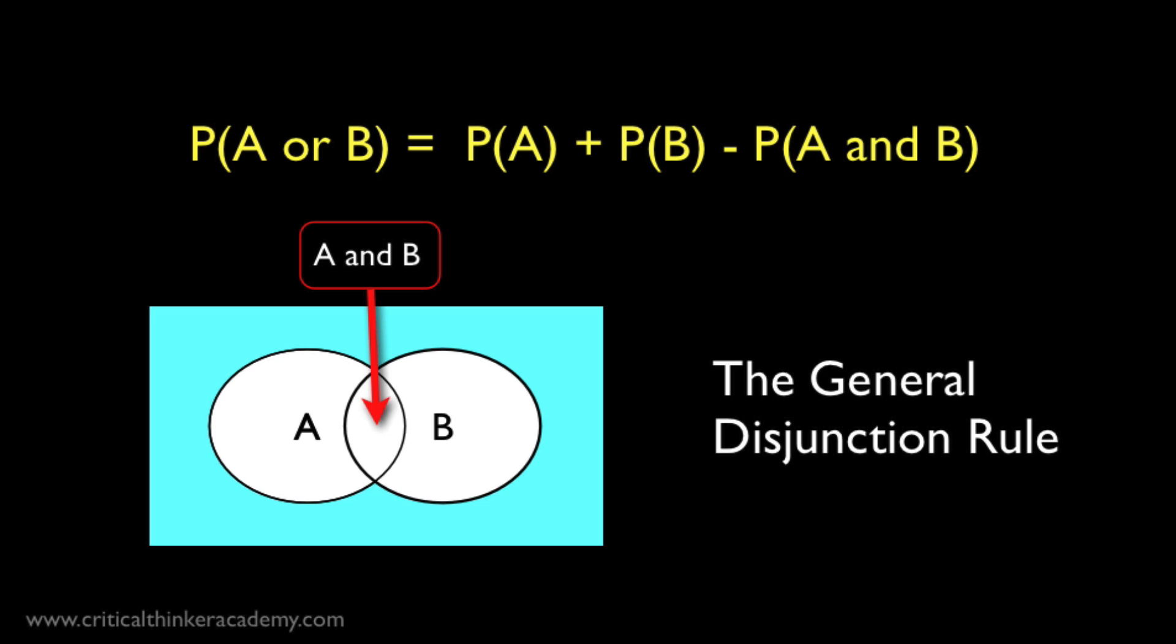And here's the general rule in terms of arbitrary events A and B. Now notice that this general rule includes the restricted rule as a special case. Since if A and B are mutually exclusive, then A and B don't overlap. And the conjunction term on the right goes to 0. And we recover the restricted rule.